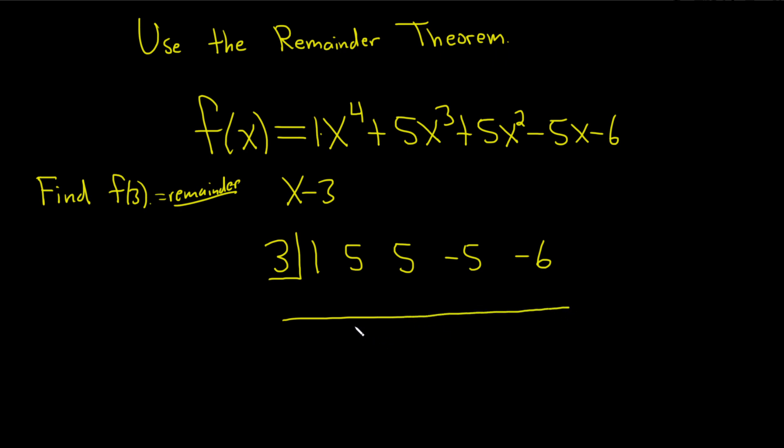All right, so the first step in the synthetic division process is to take this number and just bring it down. So you bring it down and you have a 1 here. And then you start the multiplication process. So 1 times 3 is 3. Then you add these and you get 8. 8 times 3 is 24. Numbers are getting big. You add these and you get 29.